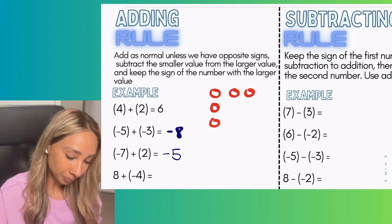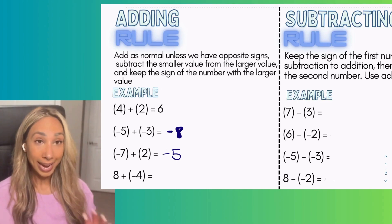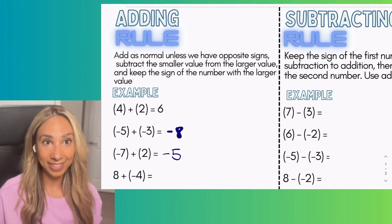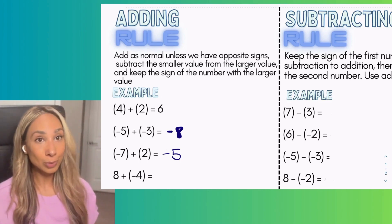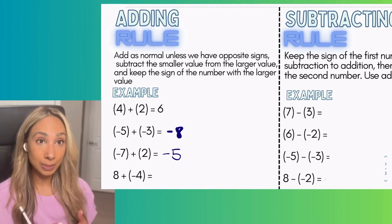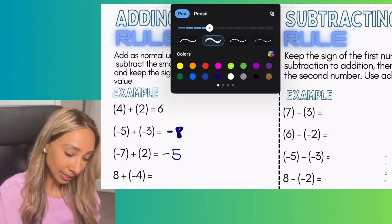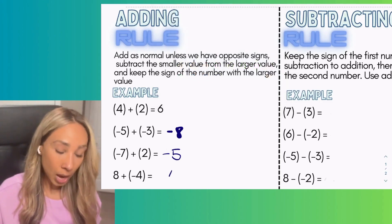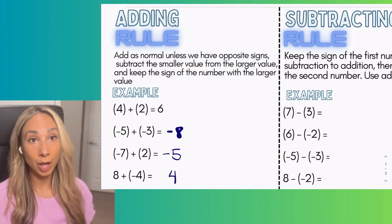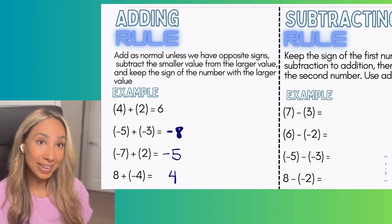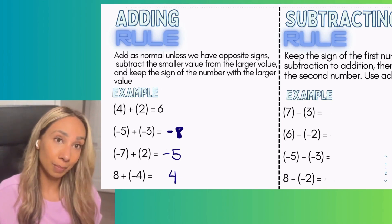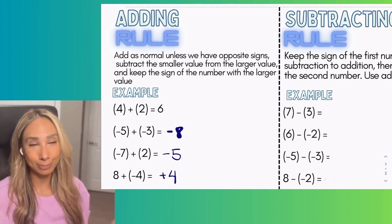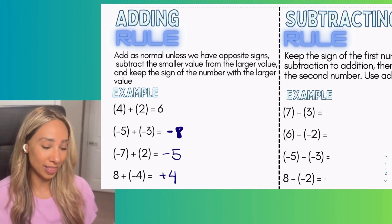In the last example, we have eight positive things and we're adding four negative things to it. We subtract as the rule says: eight take away four is four. We keep the sign of the larger value, which is positive, so our answer is positive four. For convention, we typically don't write the positive sign, but it doesn't matter either way.